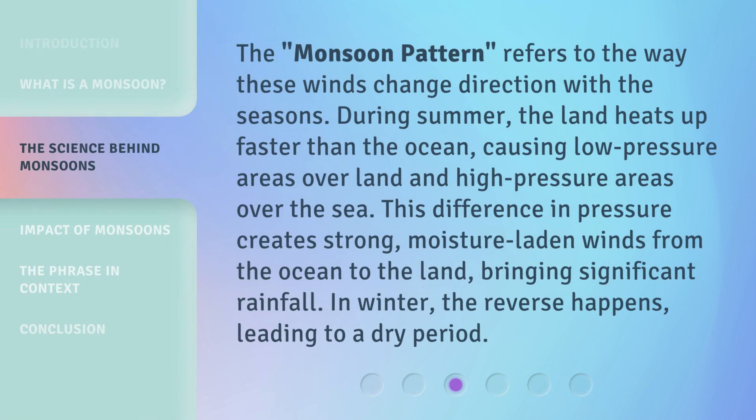The monsoon pattern refers to the way these winds change direction with the seasons. During summer, the land heats up faster than the ocean, causing low-pressure areas over land and high-pressure areas over the sea. This difference in pressure creates strong, moisture-laden winds from the ocean to the land, bringing significant rainfall. In winter, the reverse happens, leading to a dry period.